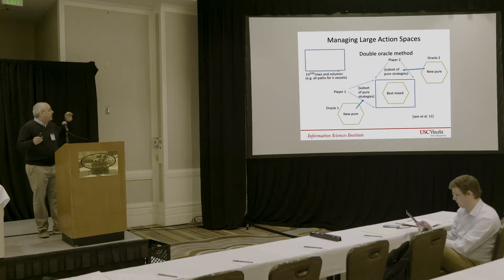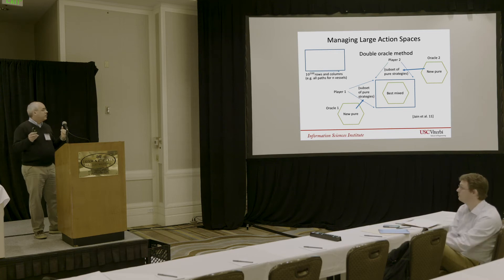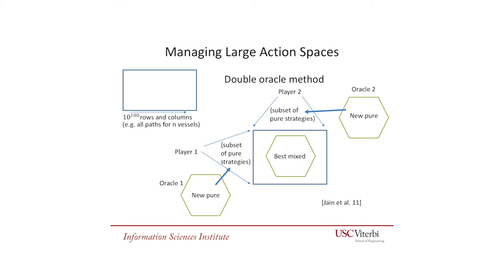We want to model these complex plans and find the best patrols against them. This leads us to deal with large action spaces where there might easily be 10 to the 100 different possible plans for a coordinated smuggler. We use the double oracle method to handle this. Each player models just a subset of all possible strategies. On each iteration, we use a mixed integer program to find the best mixed strategy—a probabilistic distribution—and find the Nash equilibrium for that small subgame. Then each player applies an oracle to produce a new strategy that performs better against the other player's best strategy, again using a mixed integer program. Then we have a larger set of pure strategies and iterate.